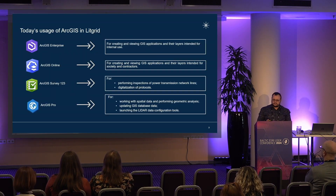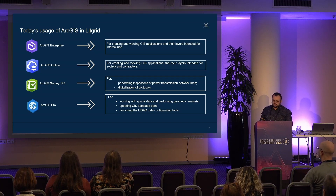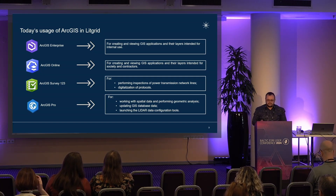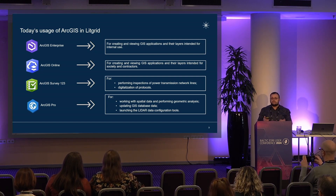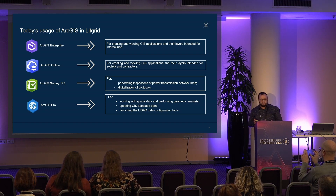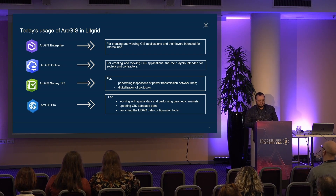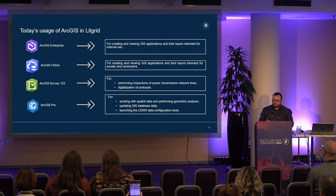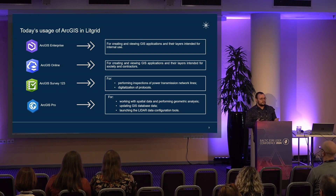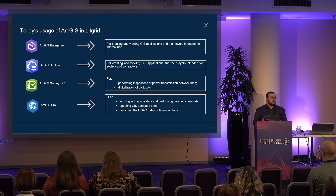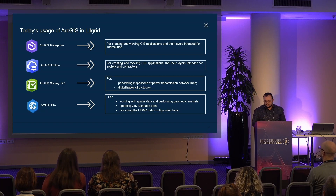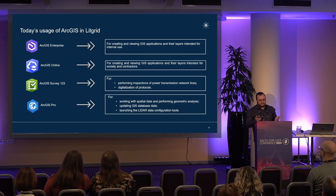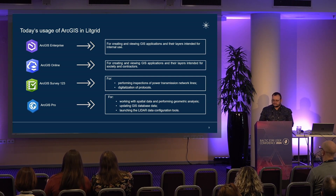In our company we use GIS products such as ArcGIS Enterprise, ArcGIS Online, ArcGIS Survey, and ArcGIS Pro. ArcGIS Enterprise is used to develop and view GIS applications for internal use, and the majority of company GIS users use these products. As for ArcGIS Online, we use it to develop GIS applications which are made accessible to the public on our company website. Also in ArcGIS Online we have developed a GIS application portal for our maintenance contractors.